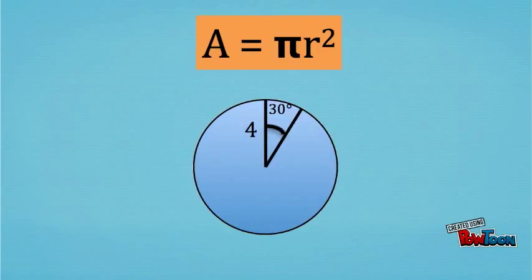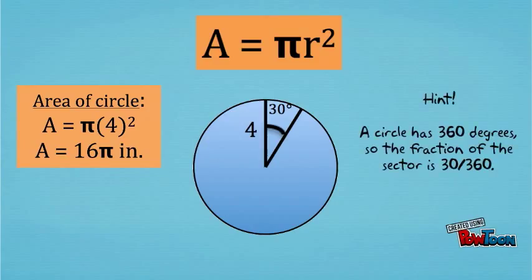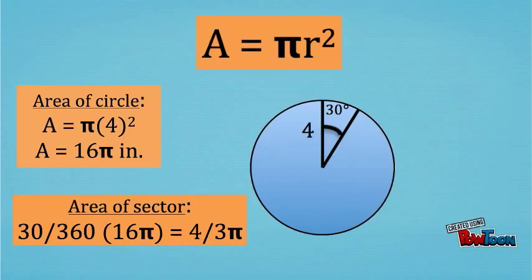Now, let's try a slightly more difficult fraction. Let's say that the central angle of our sector is 30 degrees. Our area of the circle with a radius of four again is 16 pi. So to find the area of the sector, we can simply multiply the area by the fraction of the central angle measurement over the total degrees in the circle. So our answer then is four thirds pi.